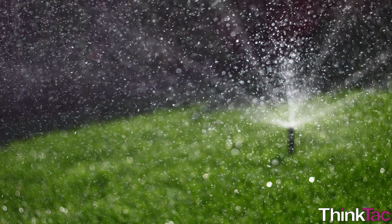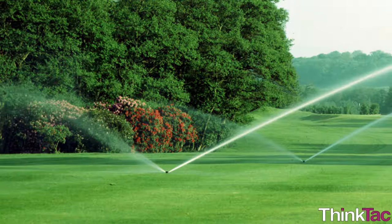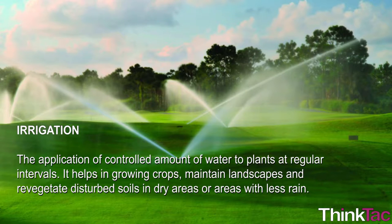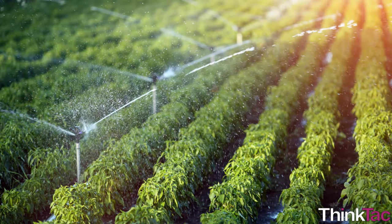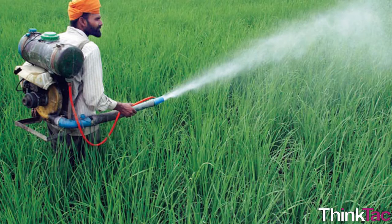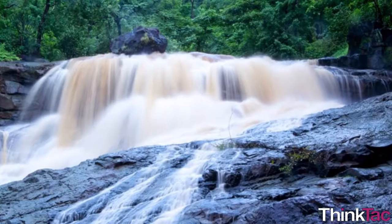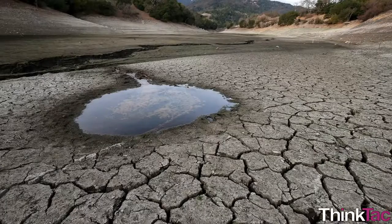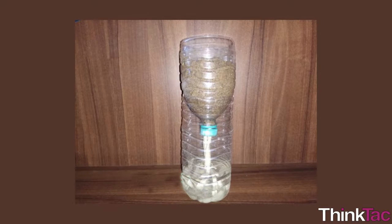Till now, you must have come across the word irrigation in your textbooks in relation to agriculture. Irrigation means the application of a controlled amount of water to plants at regular intervals. It helps in growing crops, maintaining landscapes, and re-vegetating disturbed soils in dry areas or areas with less rain. Irrigation is a very time-consuming process which includes a lot of labor, cost, water, and sunlight. Water is a valuable resource getting depleted day by day, so this experiment will help us use water efficiently and effectively.